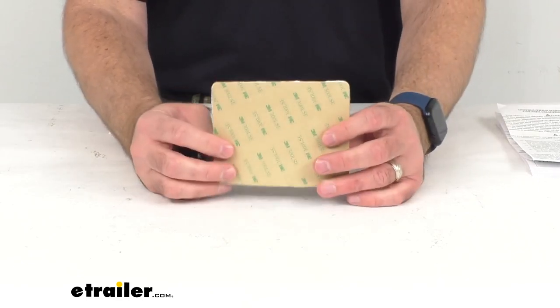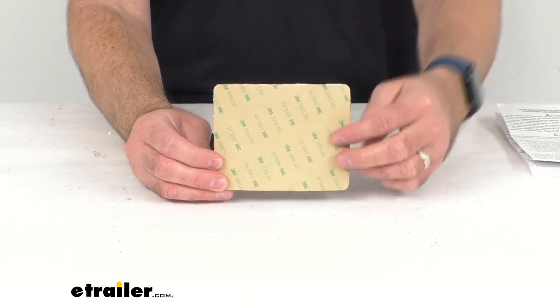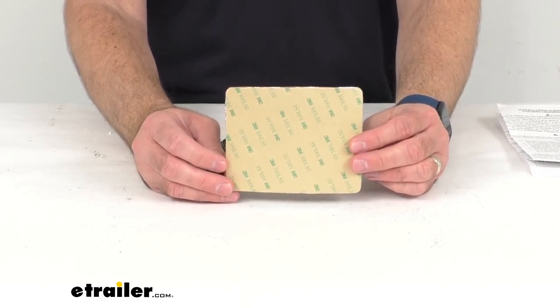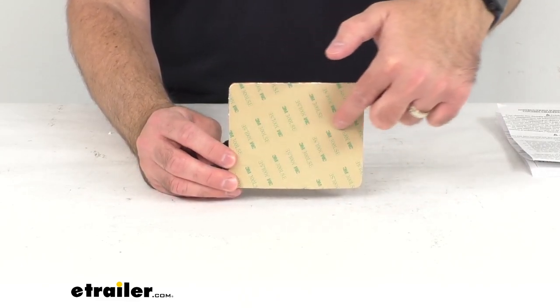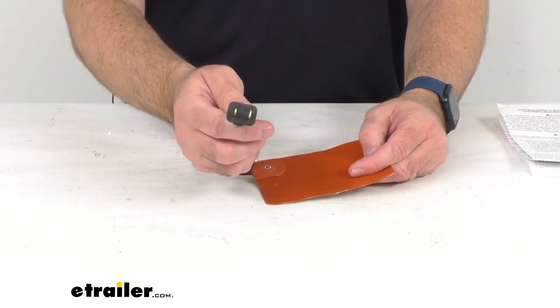This is going to be very simple to install. You're just going to attach this to the underside of your vehicle's oil or transmission pan with the 3M tape and then you're just going to plug this into your 120 volt outlet.